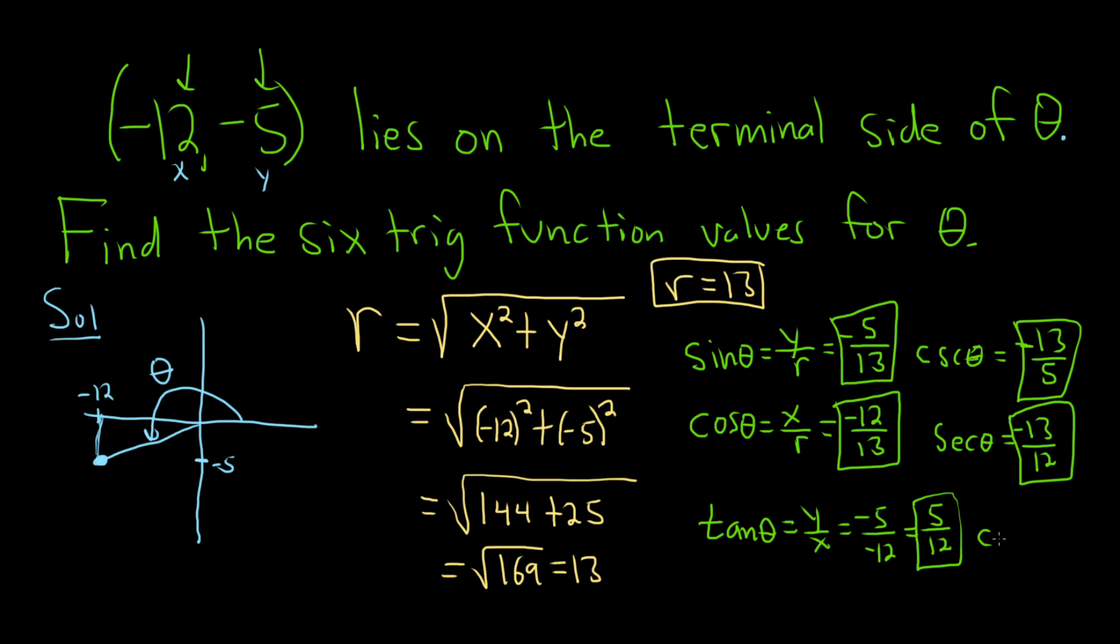The reciprocal of tangent is cotangent. So basically you just flip the answer here. So we get 12 over 5. And those would be the six trig function values for theta.